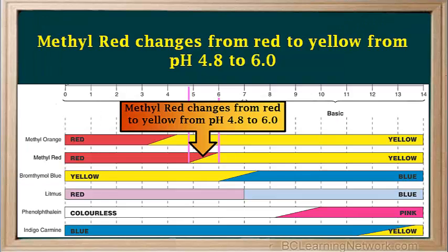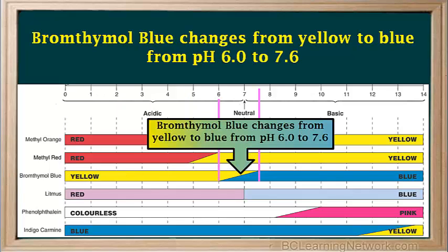Looking at the indicator methyl red, we see it changes from red to yellow over a range of pHs from 4.8 to 6. Between 4.8 and 6, the color is various shades of orange. We can also see that the indicator bromothymol blue changes from yellow to blue over a range of pHs from 6 to 7.6. Between 6 and 7.6, it ranges from yellow-green to green to blue-green.